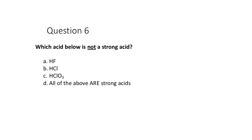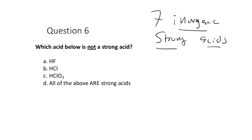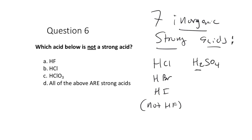This slide covers the strength of acids. There are seven inorganic strong acids — I stress inorganic because there are organic strong acids too. The seven strong acids are HCl, HBr, HI (but importantly NOT HF), H₂SO₄ (the only diprotic acid on the list), HNO₃, HClO₃, and HClO₄. For H₂SO₄, only the first H is strongly acidic — it goes 100% to H⁺ and HSO₄⁻. The second step, HSO₄⁻, is actually a weak acid dissociating to only about 5–10%.